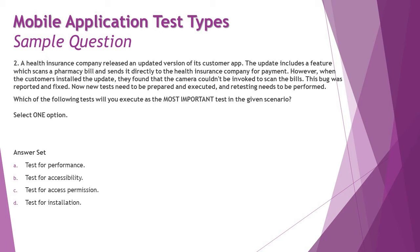We have four options: test for performance, test for accessibility, test for access permission, and test for installation. The issue reported was that the camera could not be accessed after the update was installed, so access to the camera was not provided. Test for performance is not a right answer — there's no hint about multiple users working simultaneously. Accessibility is also not in scope here, as we are not talking about differently-abled users.